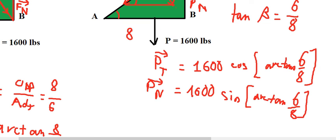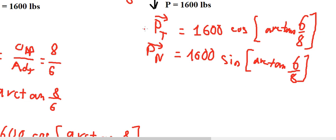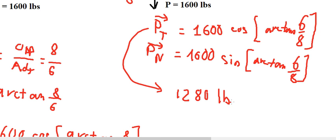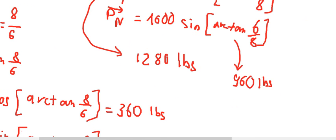We calculate these values. Bt equals 1280 pounds, and Bn equals 960 pounds. This is the end — thank you for watching.